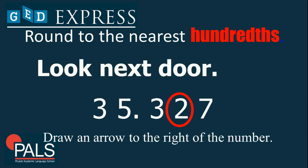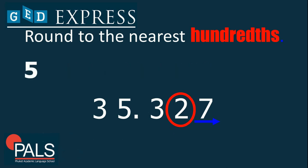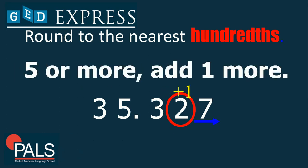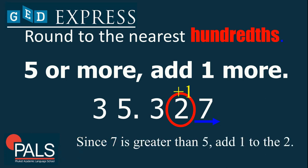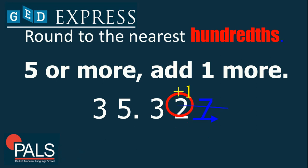We have 2, which is the number we're rounding, and it is preceded by 7. Following the rule — if it's 5 or more, we add 1 — so 2 plus 1 gives us 3. If we're rounding to the nearest hundredths, the result becomes 35.33.